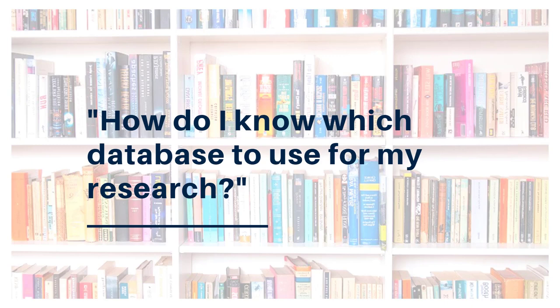If you've watched the other videos on our channel, you'll know that you can use Catalyst, the library search tool, to search all of the books and DVDs on our shelves and the electronic content in our databases all at once. You'll also know that you have the option to search individual library databases one by one. This is a great option if your research topic is very focused on one specific subject area, if you find that you're getting too many results when you're using Catalyst, or if you find that you're getting too many results that aren't relevant to your topic.